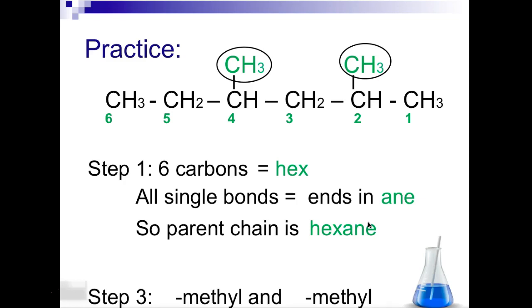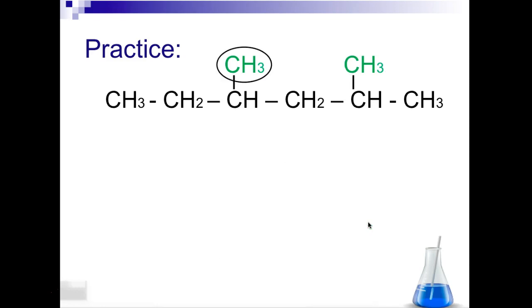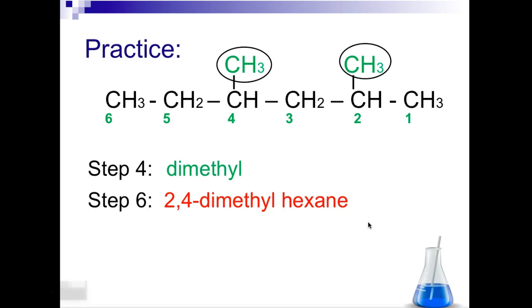Step three is we're going to add the numbers for the methyl group. So we want them to have the lowest number. So it's going to be 2-methyl, 4-methyl. Step four, we are going to put the dimethyl there. So that's the prefix to show that there are two methyl groups. And then step six is naming the whole thing. So we have 2,4-dimethylhexane.